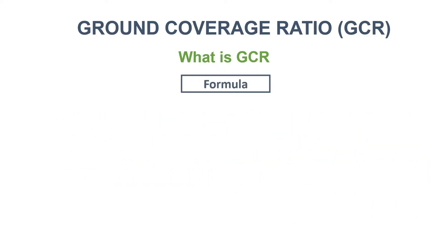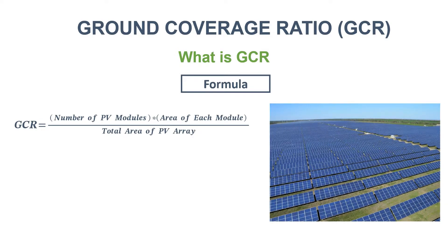Let's see how it looks in mathematical form. GCR is equal to the number of PV modules multiplied by the area of a single module, divided by the ground area which is covered by the entire array.